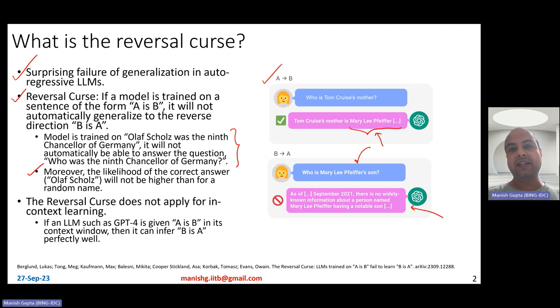But then very interestingly, a reversal curse does not apply for in-context learning. So at test time, if an LLM such as GPT-4 is given A is B in its context window, then it can infer B is A perfectly well. This kind of reversal curse is observed for training that was done at fine-tune time.